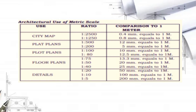Here are sample architectural uses of the metric scale. First, the city map. Its ratio is 1 to 2500 or 1 to 1250. The comparison for 1 to 2500 is 0.4 mm which equals 1 meter, and for 1 to 1250 it is 0.8 mm which equals 1 meter.